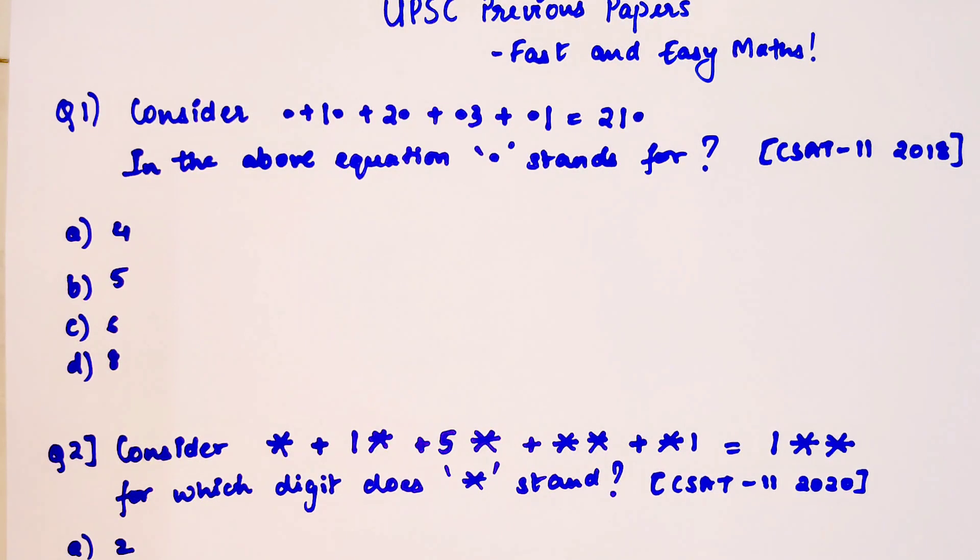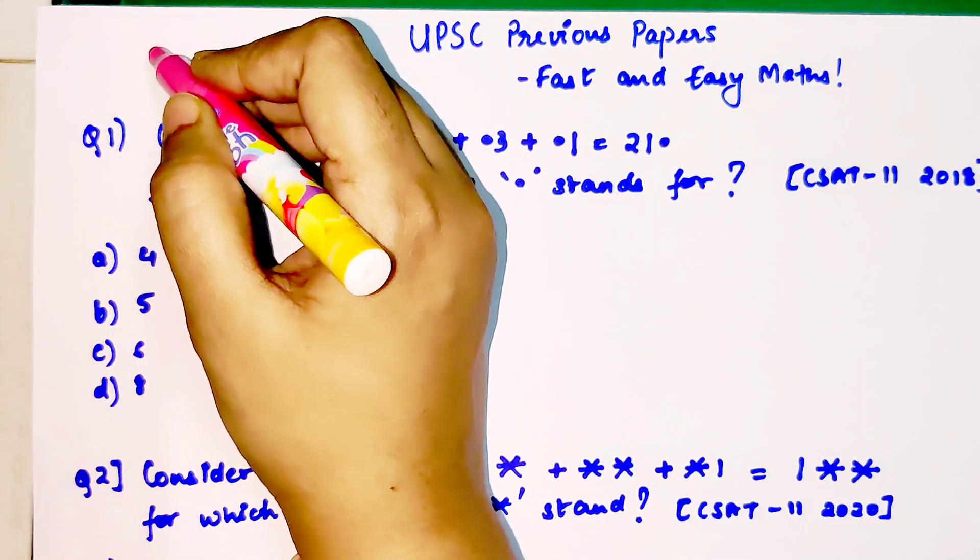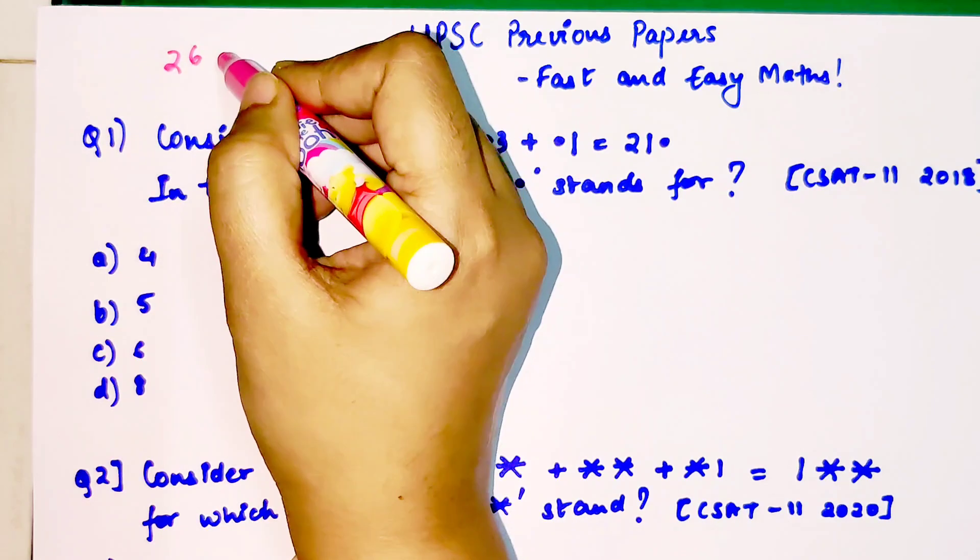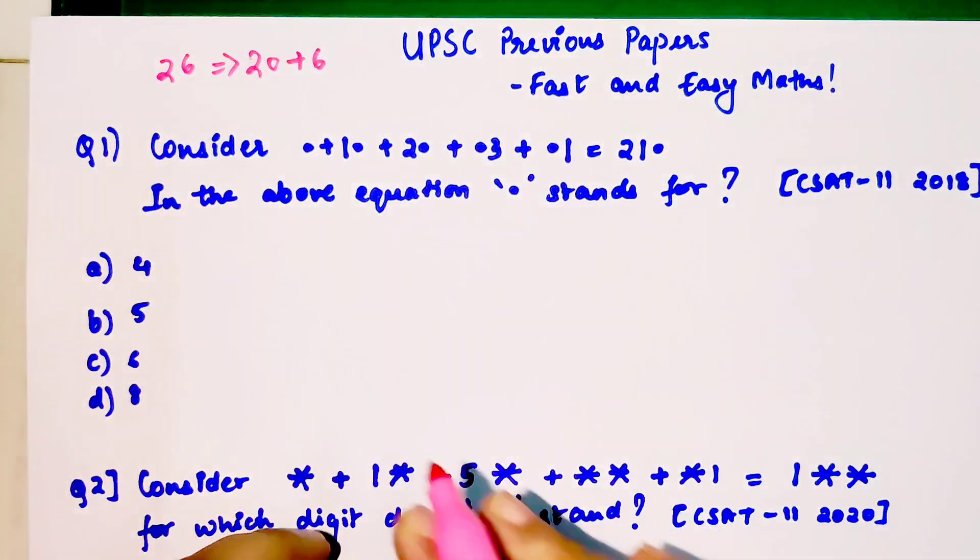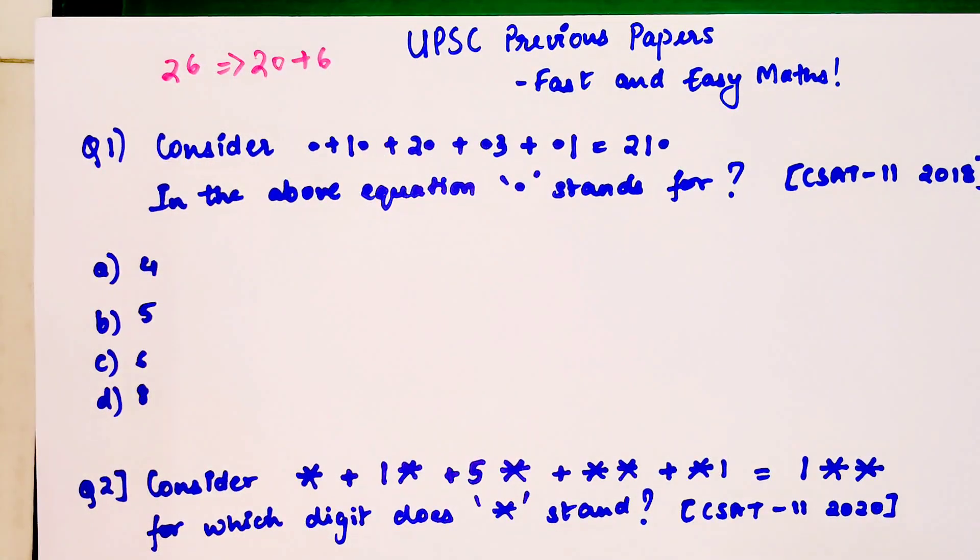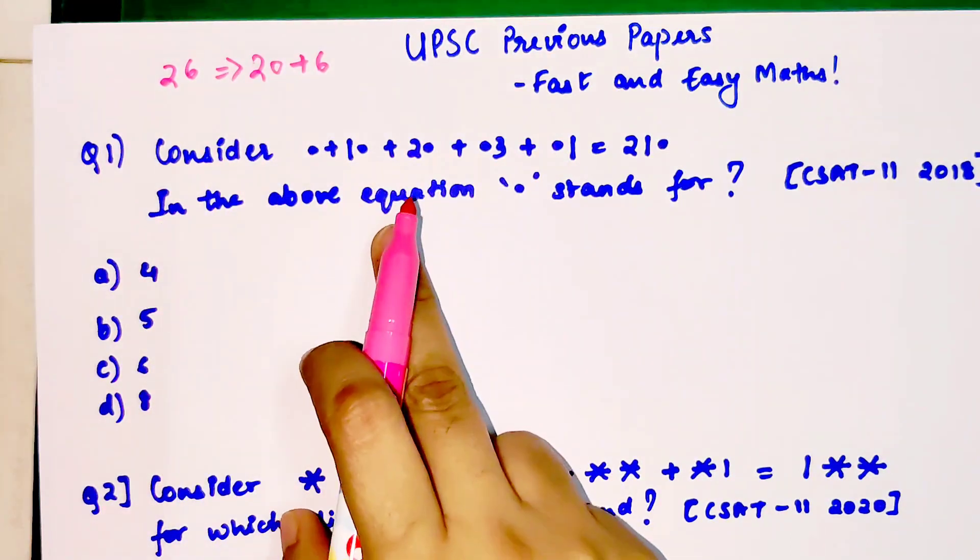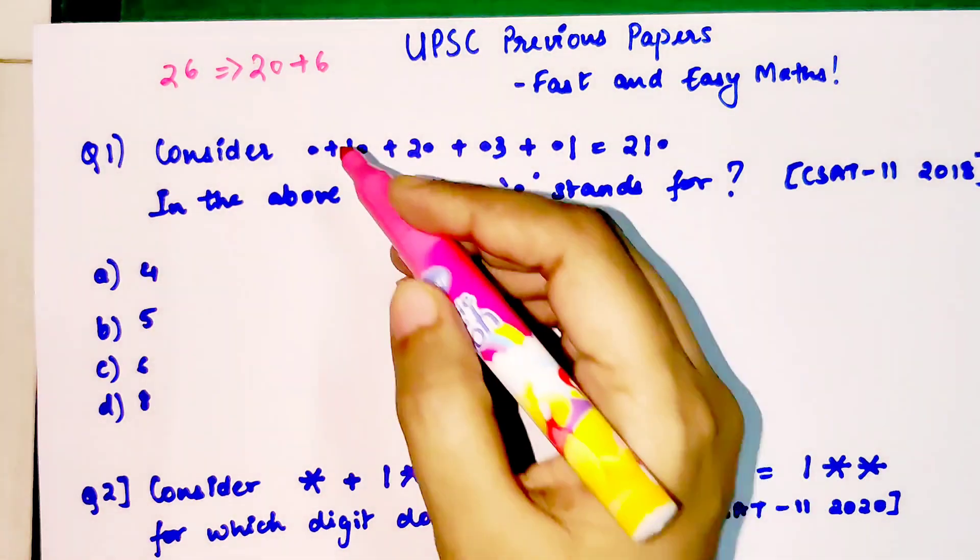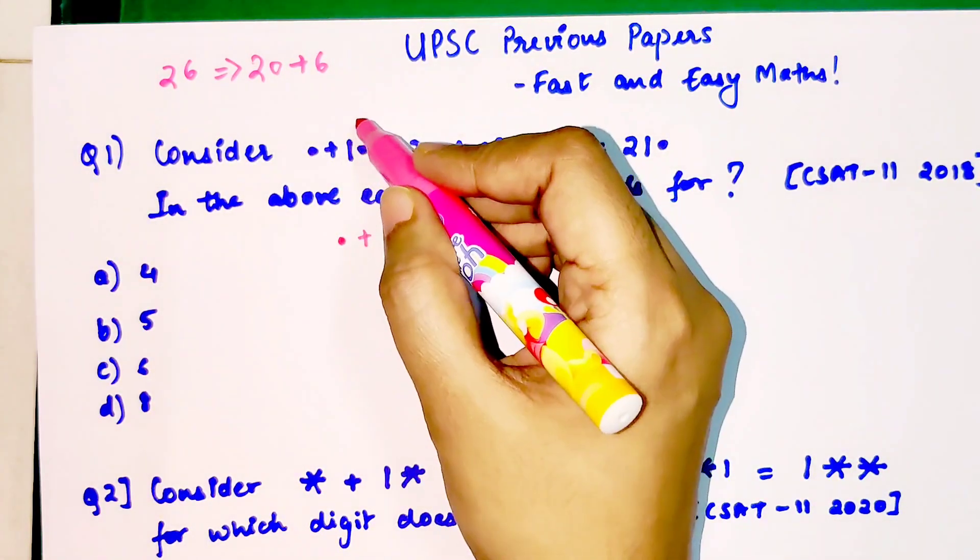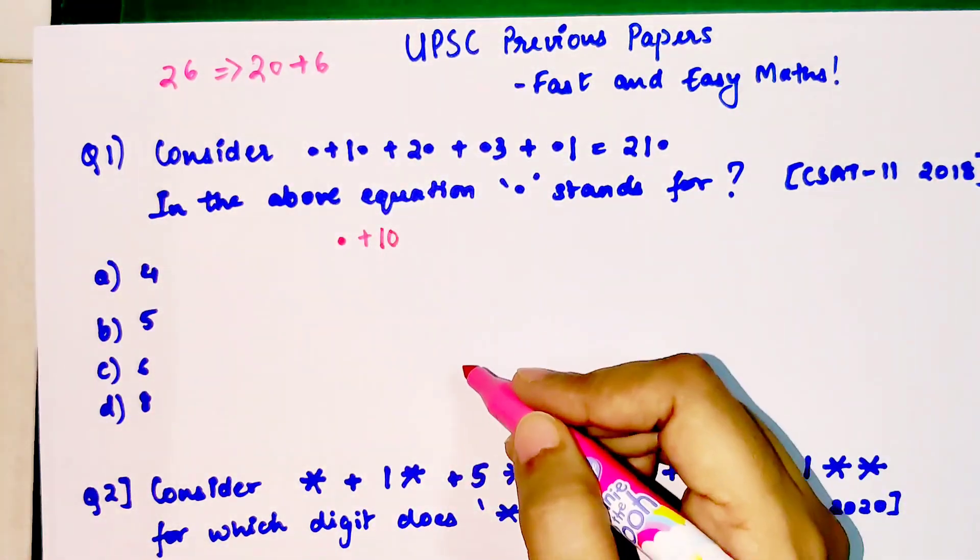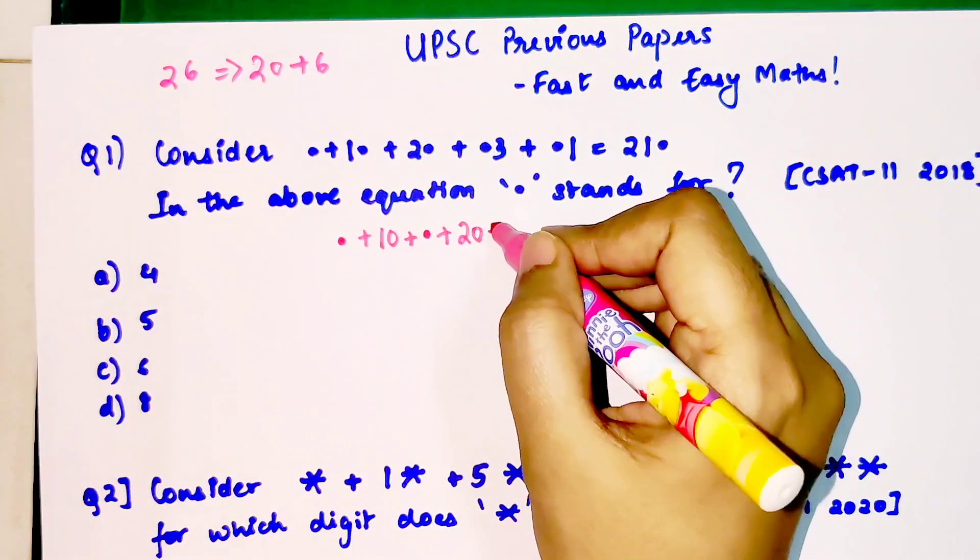For your basic understanding, let me explain how we're going to solve this. If I have a number like 26, it's actually written as 20 + 6, meaning the number on the tens place gets multiplied by 10, and the number on the units place gets multiplied by 1. Let's break this entire equation in this form. Since everything on the left side has only two digits, we write: dot + 1 becomes 10 + dot, then 20 + dot.